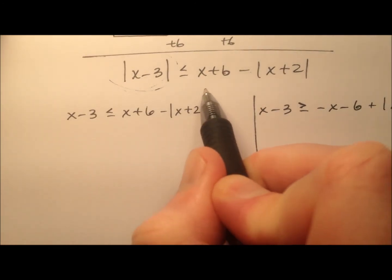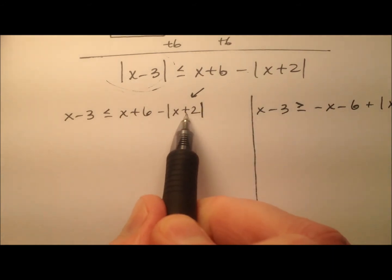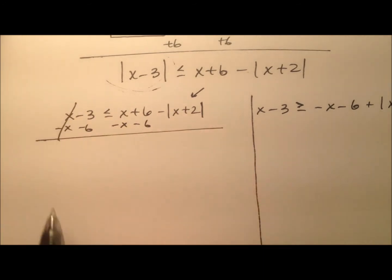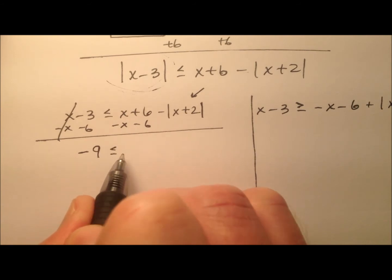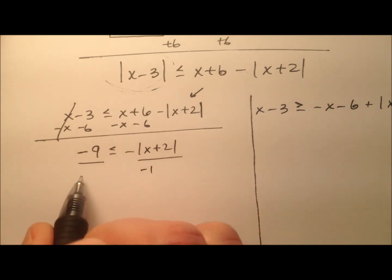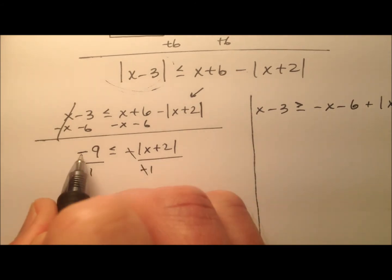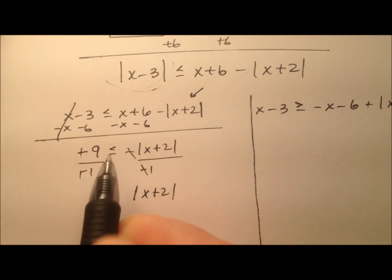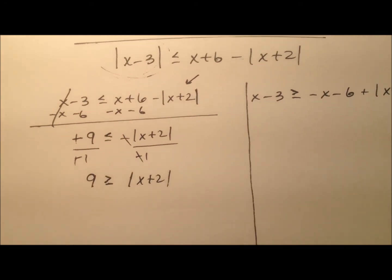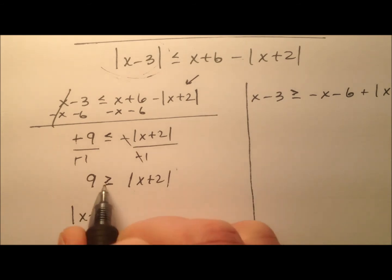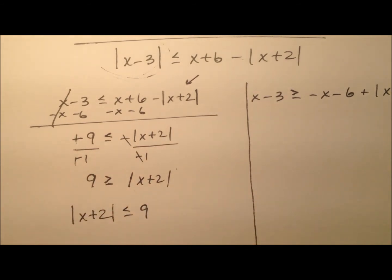Once again, I see an absolute value expression, so let's isolate that. We'll subtract x and subtract six from both sides. Those x's cancel and I have negative nine is less than or equal to negative absolute value of x plus two. I can divide by negative one to get rid of those negatives, which will also change the sign of the inequality from less than or equal to greater than or equal to. We could switch these around to see the absolute value of x plus two is less than or equal to nine.